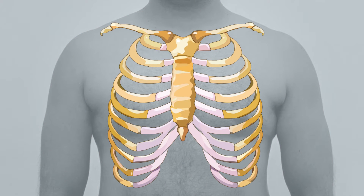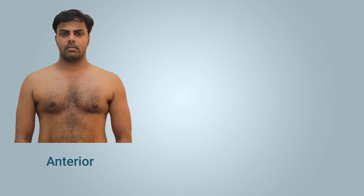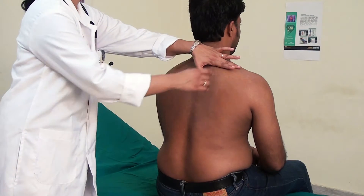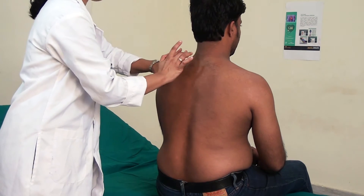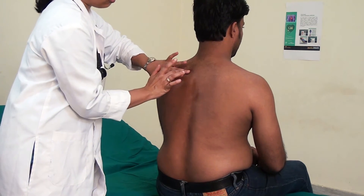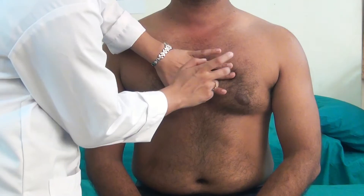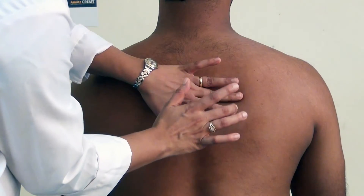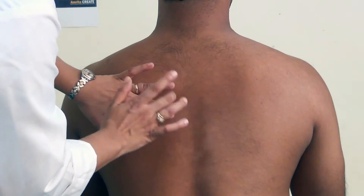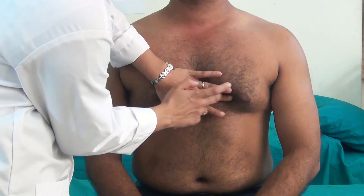Percuss over each intercostal space on the anterior, lateral, and posterior chest wall in such a way that the long axis of the percussed finger is roughly parallel to the ribs. Compare one side to the other. When percussing over the chest and back, move back and forth across the thorax in a systematic fashion, comparing one side of the body to the other.